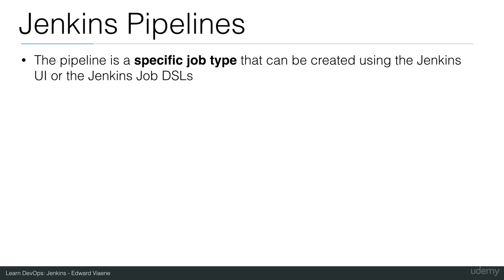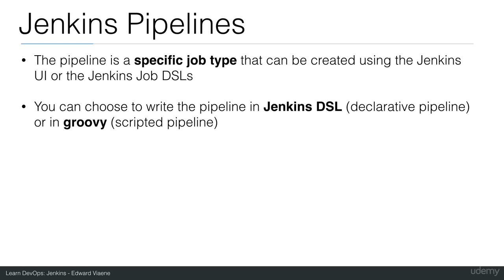The pipeline is a specific job type, just like Freestyle is also a job type, and both can be created using the Jenkins UI or the Jenkins Job DSL. You can choose to write the pipeline in Jenkins DSL, which is a declarative pipeline, or in Groovy, which is a scripted pipeline.